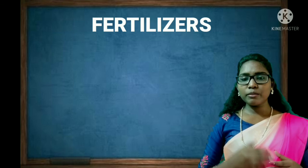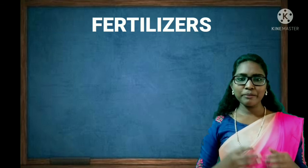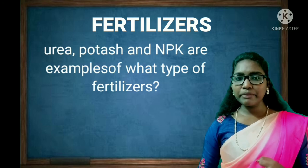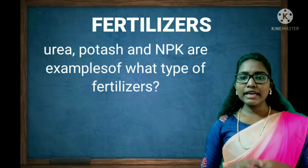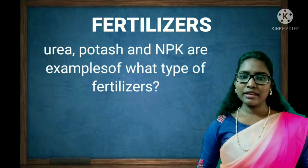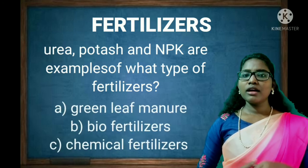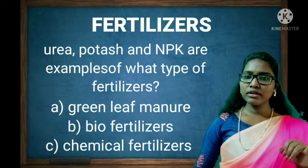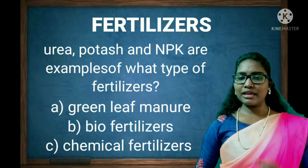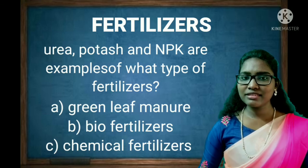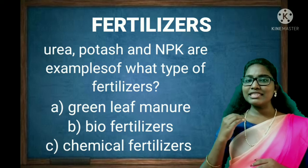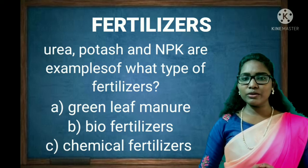Now let's move to the next question for boys. Urea, Potash, and NPK are all examples of what type of fertilizers? Options: green leaf manure, biofertilizers, or chemical fertilizers. The right answer is option C, chemical fertilizers.